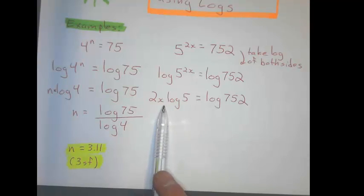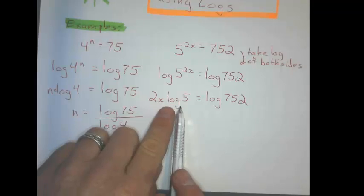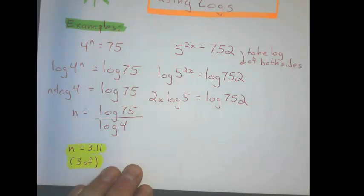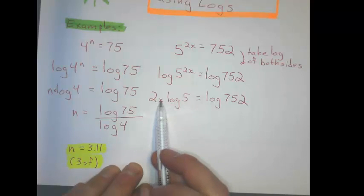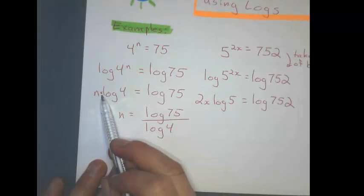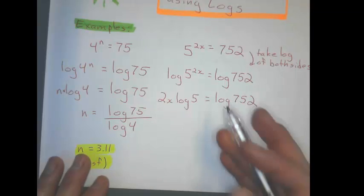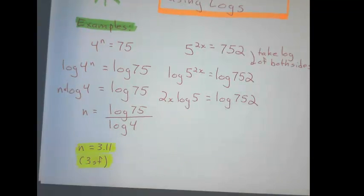And now here, I can't get x by itself just yet, so what I'm going to do is I'm just going to get 2x by itself and not x. So, in order to do that, remember, these are connected by multiplying, just like these were. So, I'm going to divide this by just log 5, and I'll just get 2x though. So, my last step here will be to divide by 2.